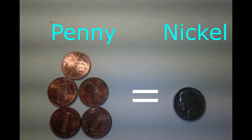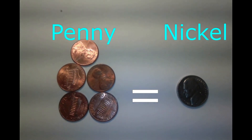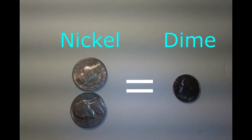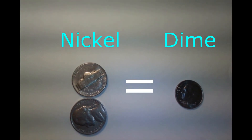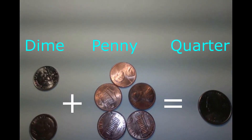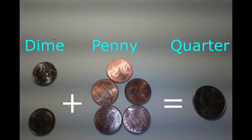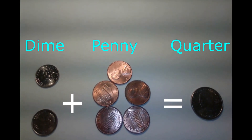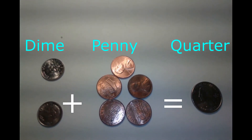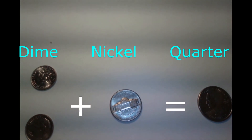Five pennies equals one nickel. And two nickels equal a dime. Two dimes and five pennies make one quarter. Two dimes and one nickel make one quarter.